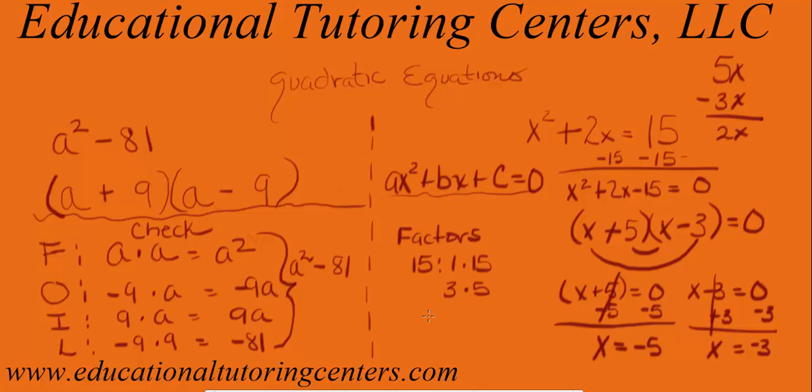So those are my solutions. Let me do these. Negative 3, comma, negative 5. Okay, so those are the solutions for that quadratic equation.